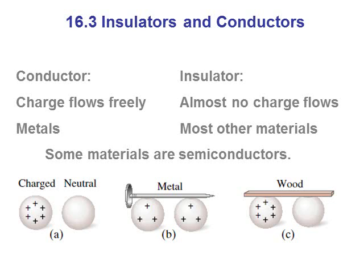You have insulators and conductors. An insulator allows no charge to flow — just like an insulator for heat doesn't allow heat to flow through it, an insulator for electricity won't allow electricity to flow through it. A conductor will allow it to flow. In the diagram, when you touch two charged balls with metal, the charges can flow; with wood, the charges aren't going to flow.